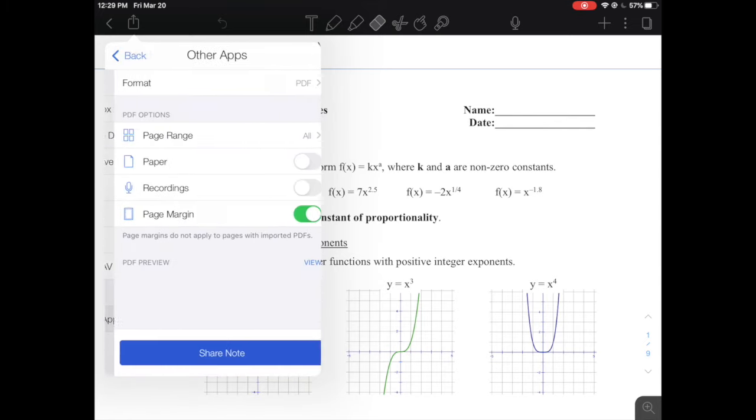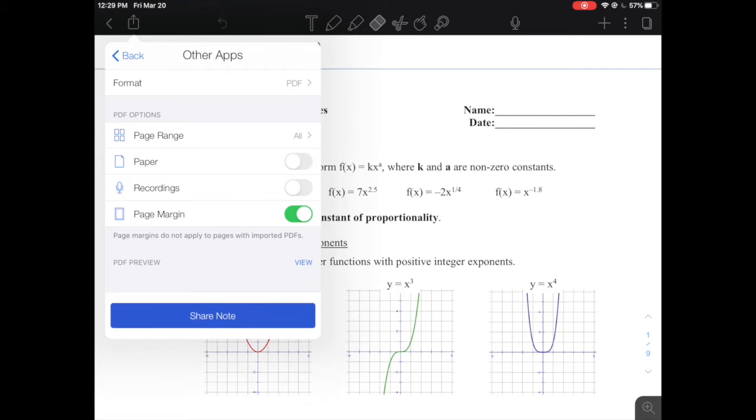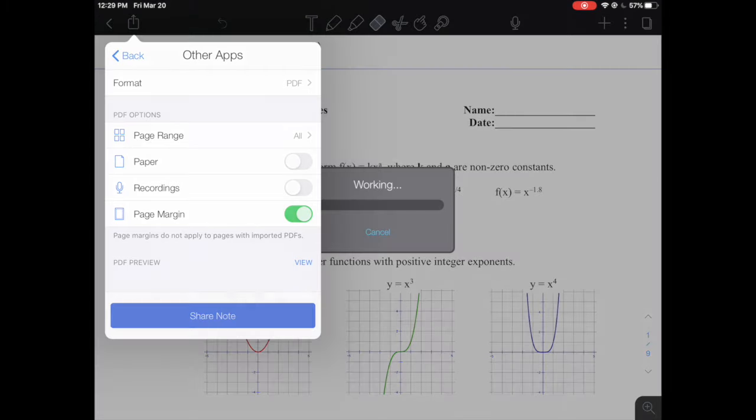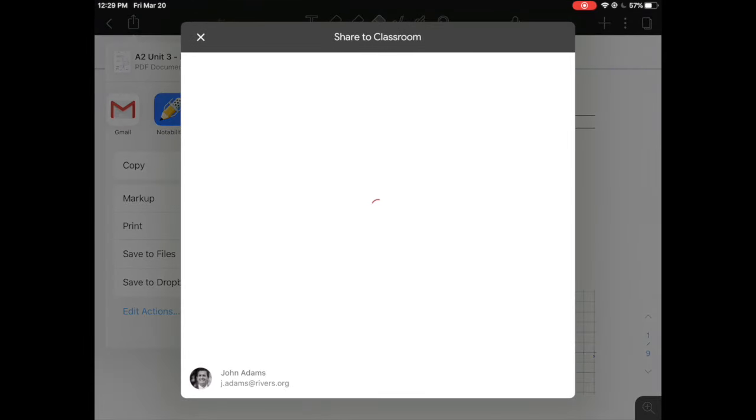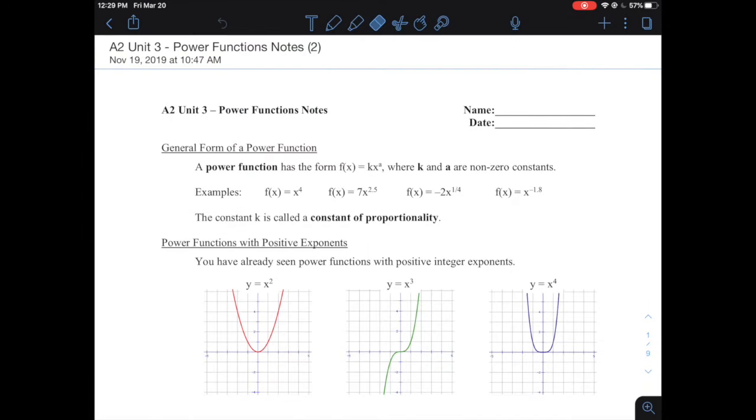Also, if I hit Other Apps at the bottom there and then I hit Share Note and I try to just go directly to Google Classroom here, oftentimes I get this spinning red wheel. I guess it changes colors, but I get this spinning wheel and it's very annoying and it doesn't end up working. So how do we get it so that it's quick to get it from here to Google Classroom?